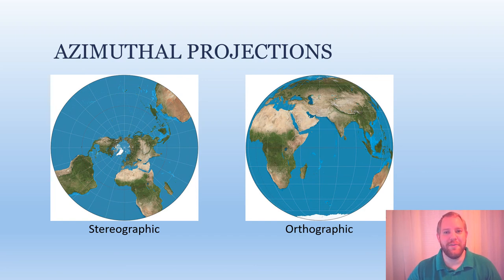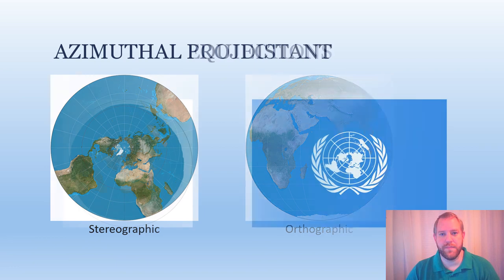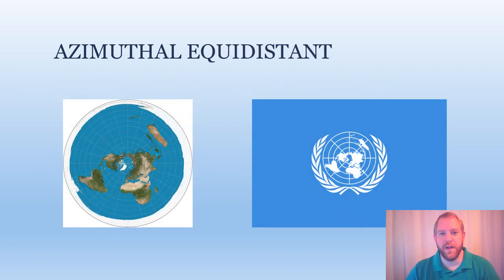However, it can give highly accurate representations of a hemisphere, as evidenced by the orthographic example on the right. I would also like to point out that the azimuthal equidistant projection is the one used as a symbol of the United Nations.